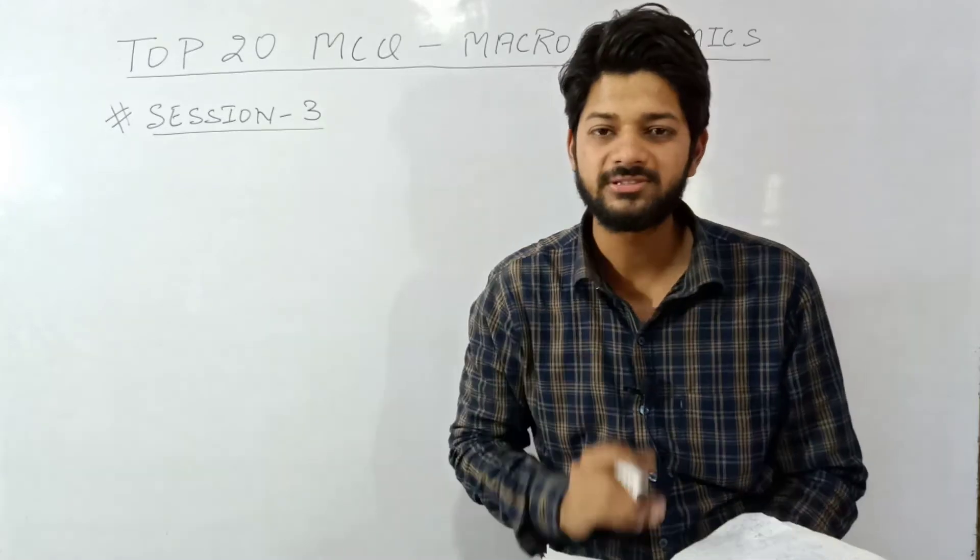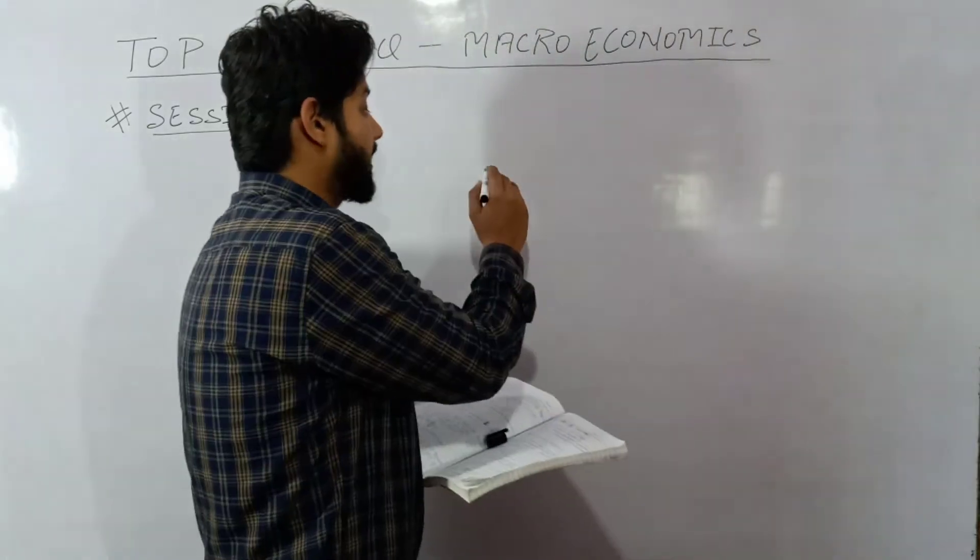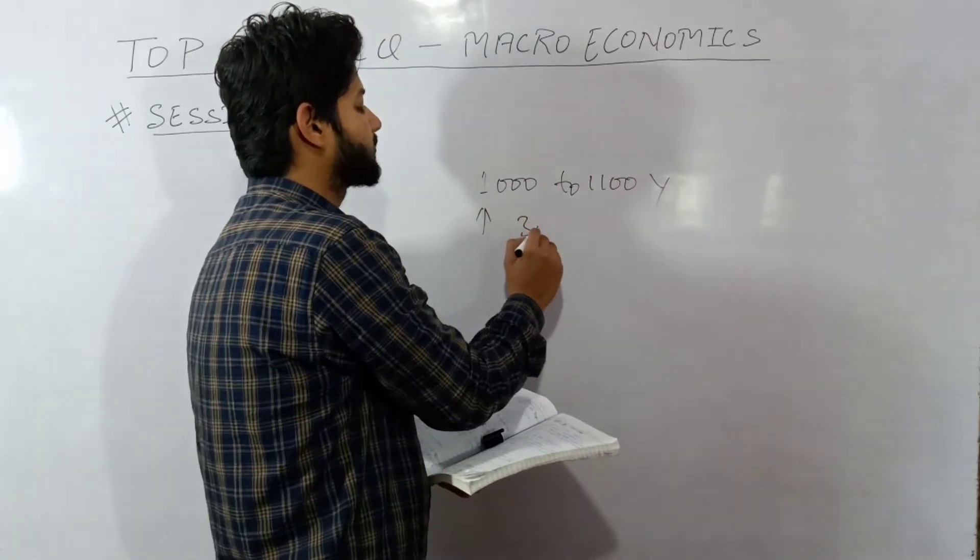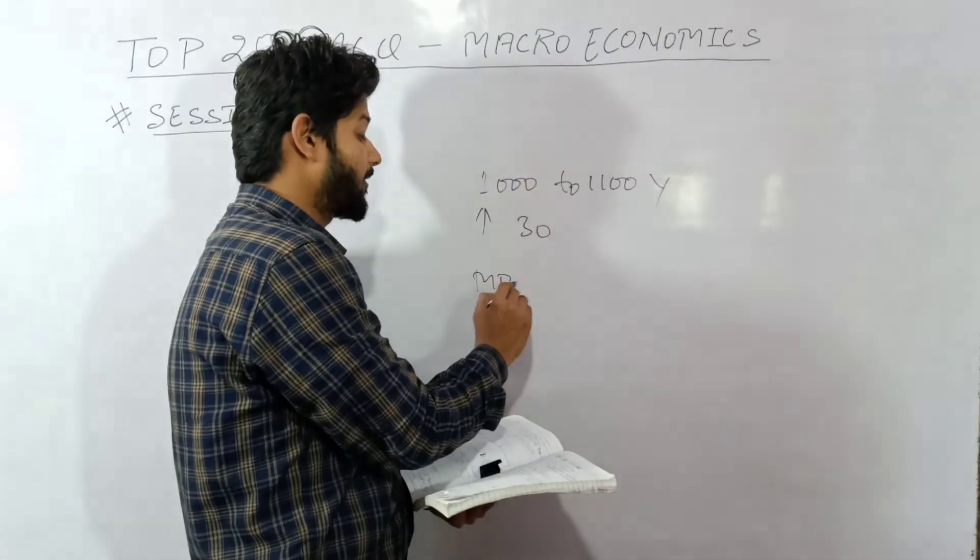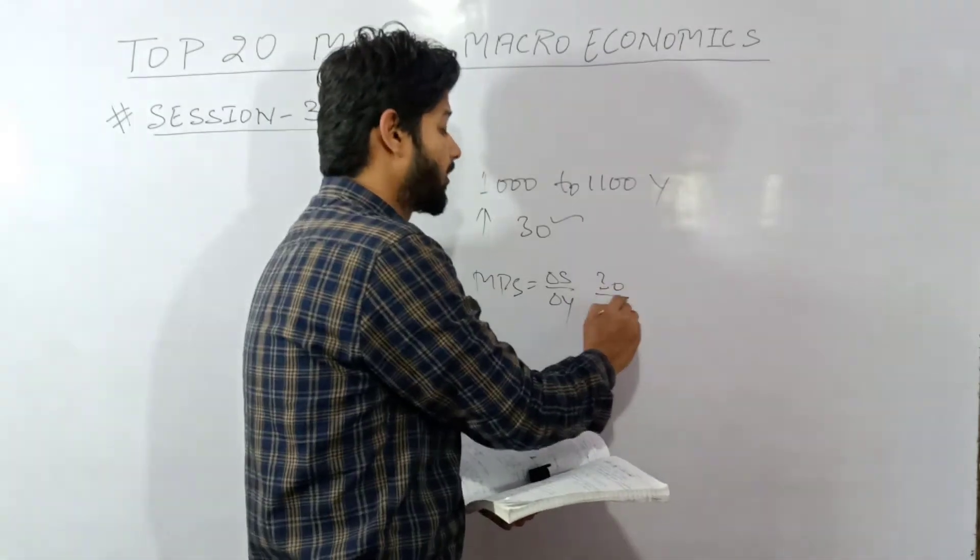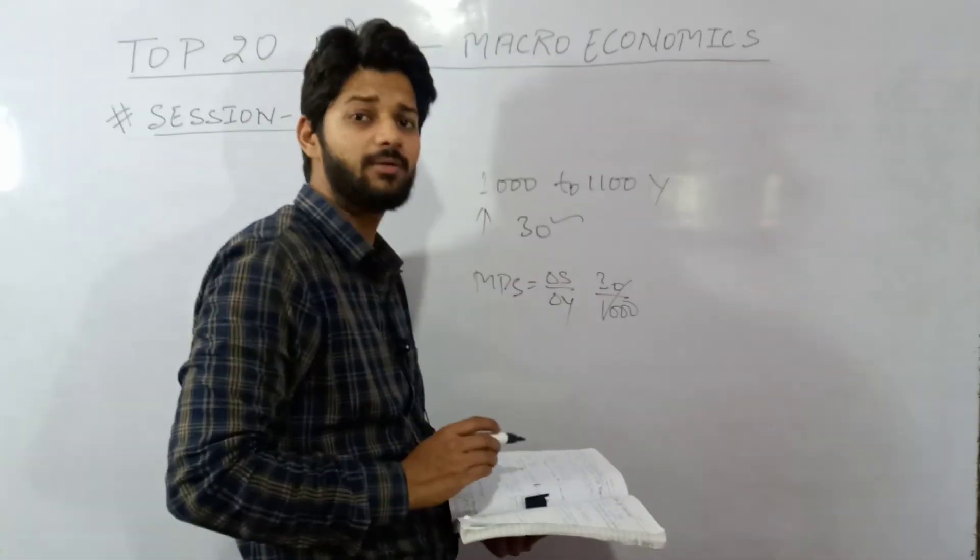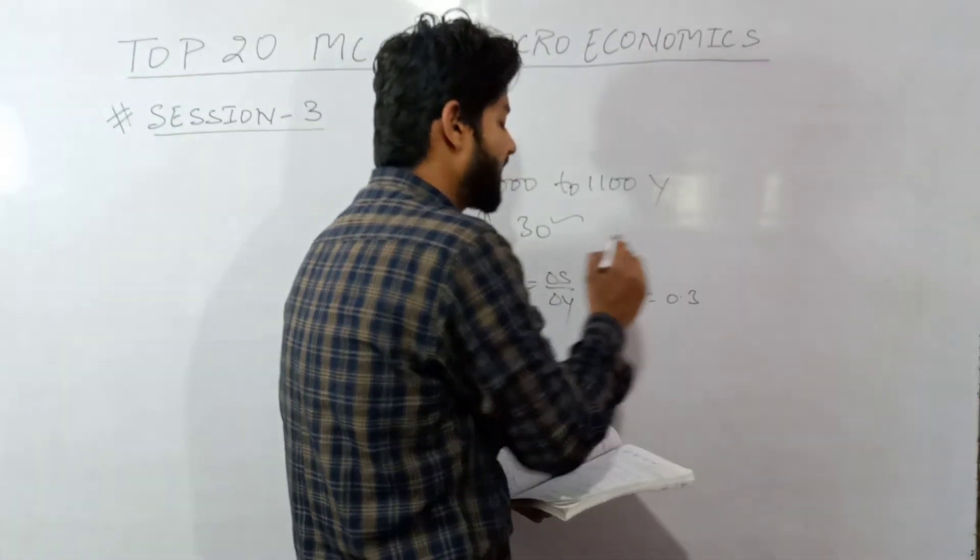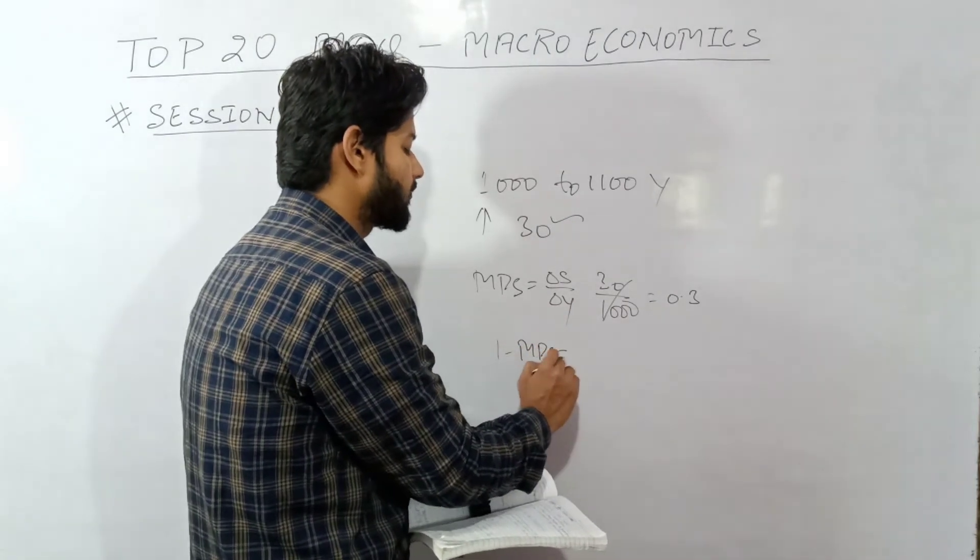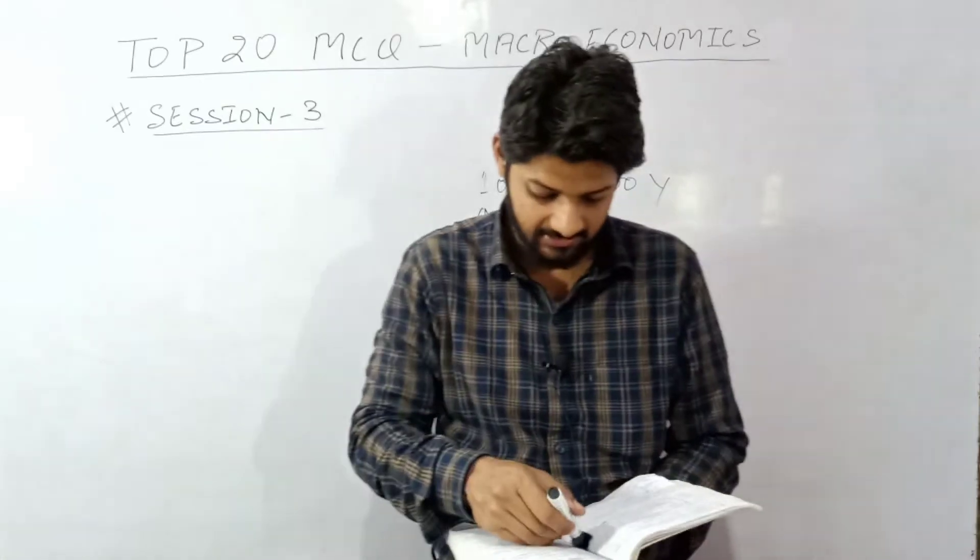Divide 30 by 1000, you will get the answer that is 0.3. This is your MPS value. Now if we have to find MPC then 1 minus MPS equals MPC. Put the value: 1 minus 0.3 equals 0.7, which is your MPC value.